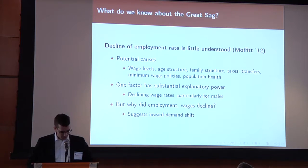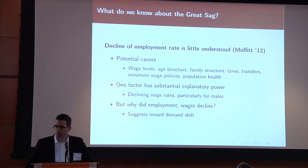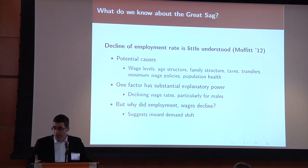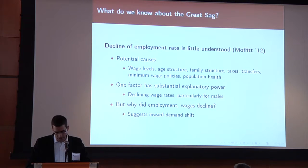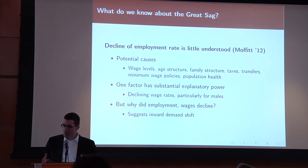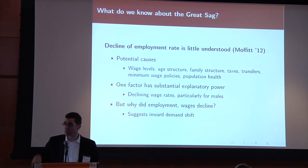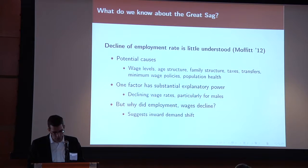In a Brookings paper article, Bob Moffitt looks at a large group of potential explanations for this reversal in employment rates. He looks at changes in tax and transfer policies, changes in demographics, and changes in various economic forces. The only factor that seems to have some explanatory power in explaining this decline in employment is falling wages, especially for low-skilled males, which are then associated with falling employment.